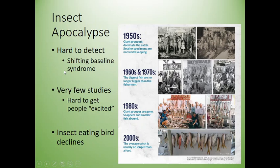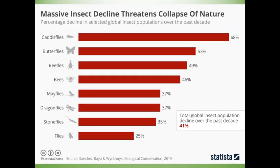One problem with measuring insect decline is the 'shifting baseline syndrome' — people's memories are short, so it's hard to know what was normal. This is analogous to fishing boats that in the 1950s caught groupers bigger than people, but by the 1980s were catching different smaller species. Applied to insects, it's even harder because nobody has good historical data on insect populations, and it's hard to get people excited about bugs — they just think 'less mosquitoes.'